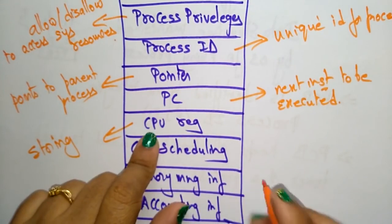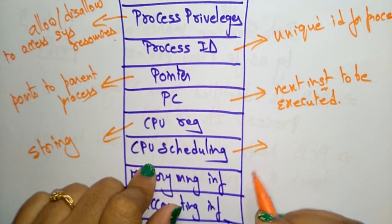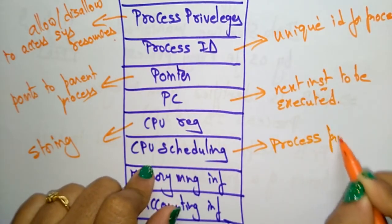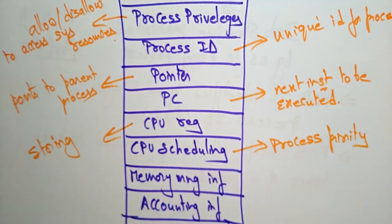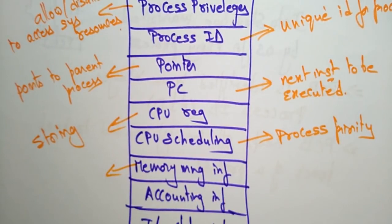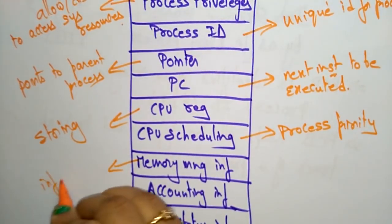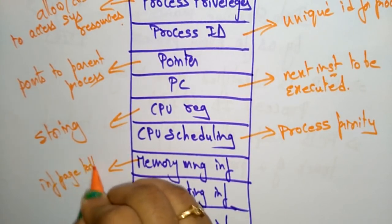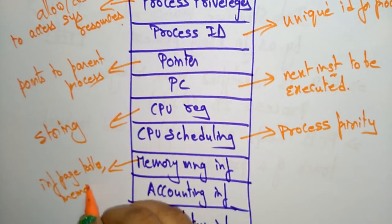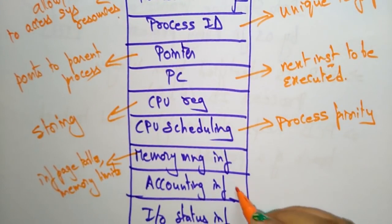CPU registers are used for temporary storage of data during execution. CPU scheduling decides the process priority — the process priority is stored in CPU scheduling. Memory management information includes information of page tables and memory limits — how much memory is to be used.